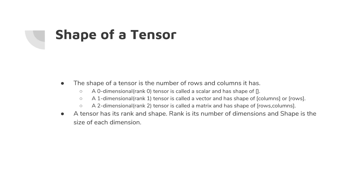Now let's see what the shape of a tensor is. The shape of a tensor is the number of rows and columns it has. Suppose you have a two-dimensional matrix with five rows and six columns — the shape will be 5 comma 6. The rank of that matrix is 2, but the shape is 5 comma 6. A scalar has no shape. A one-dimensional vector's shape is denoted by the number of its elements. For a two-dimensional matrix, shape is denoted as rows comma columns.